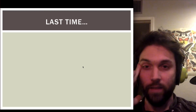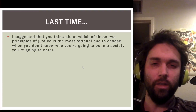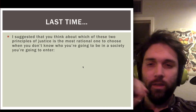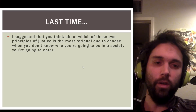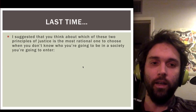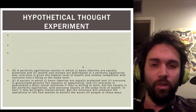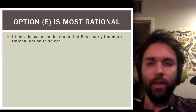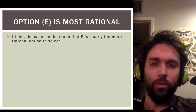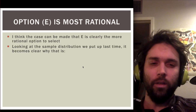This is where we left off last time. I suggested you think about which of the two remaining principles of justice — options D or E — is the most rational one to choose when you're in this highly artificial situation of not knowing which person in society you're going to end up being. I think a case can be made that E is clearly the more rational option, and looking back at our sample distribution makes it easy to see why.